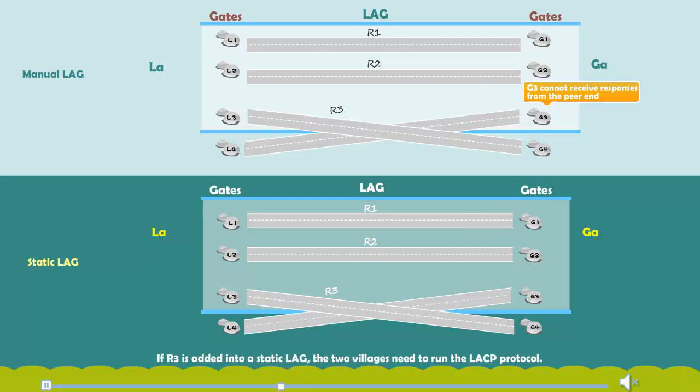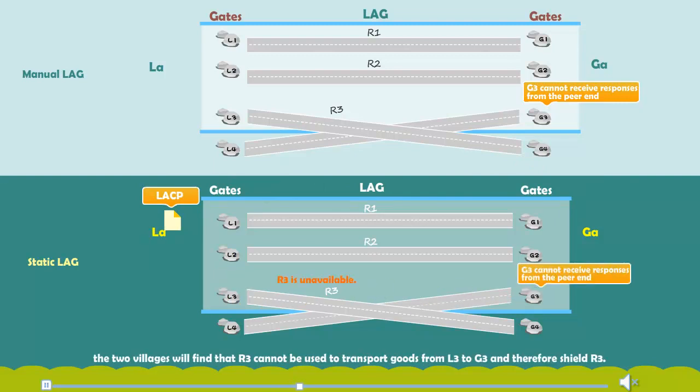If R3 is added into static LAG, the two villagers need to run the LACP protocol. By running the LACP protocol, the two villagers will find that R3 cannot be used to transport goods from L3 to G3 and therefore shield R3.